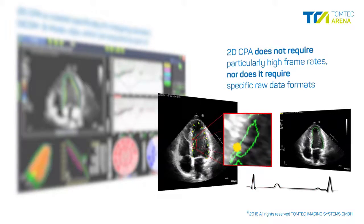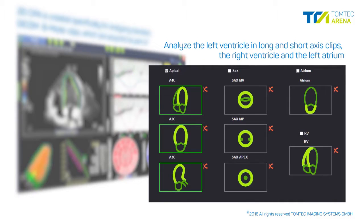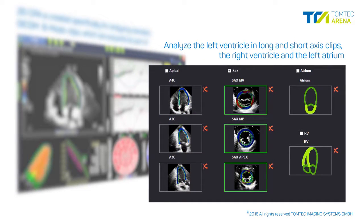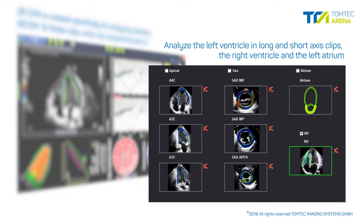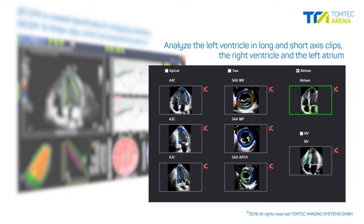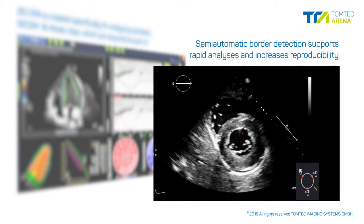2D CPA's versatility allows analyzing the left ventricle in long and short axis clips, the right ventricle, and the left atrium. Semi-automatic border detection supports rapid analyses and increases reproducibility.